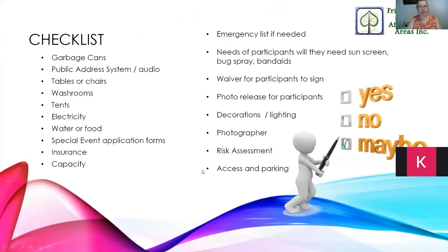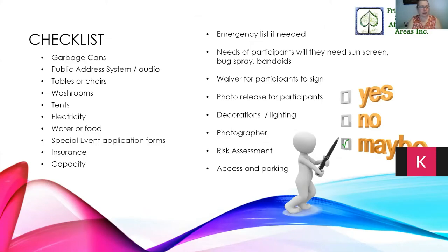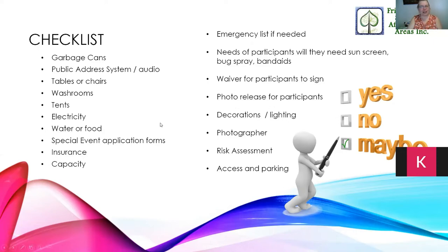For a group event checklist: bring sunscreen, bug spray, and band-aids. Have a photo release for participants, and if COVID protocols require it, have a waiver for participants to sign. Determine how long you want people involved in your bio blitz, consider access to nearby washroom facilities or portable toilets. Other citizen science events might need electricity, insurance, or decorations. But for the City Nature Challenge, you generally just upload iNaturalist to your phone and take pictures of nature around you.